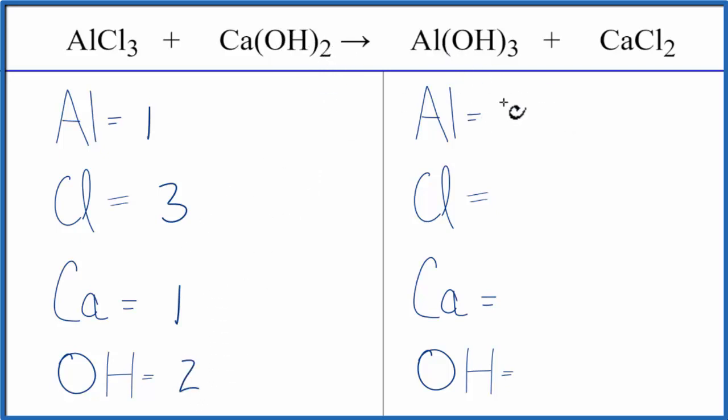On the product side, one aluminum, two chlorines, one calcium, and then three of these hydroxides. So now we can balance the equation.